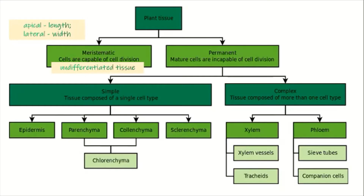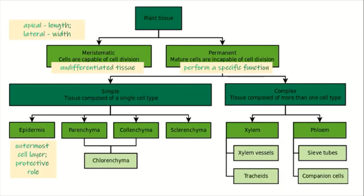Under the simple plant tissues, we have the epidermis. Permanent tissues perform a specific function. The epidermis is the outermost layer of plants and it has a protective role — similar to the epidermis of animals.